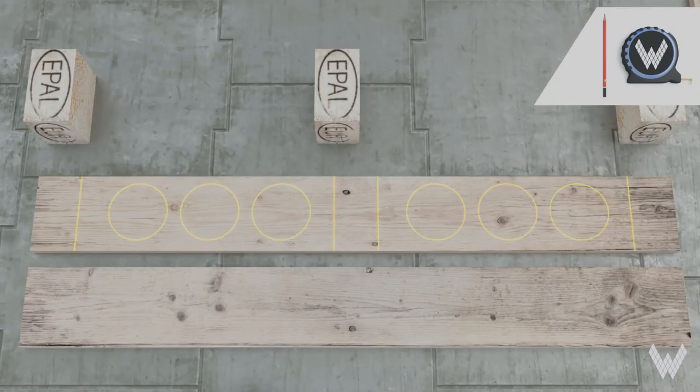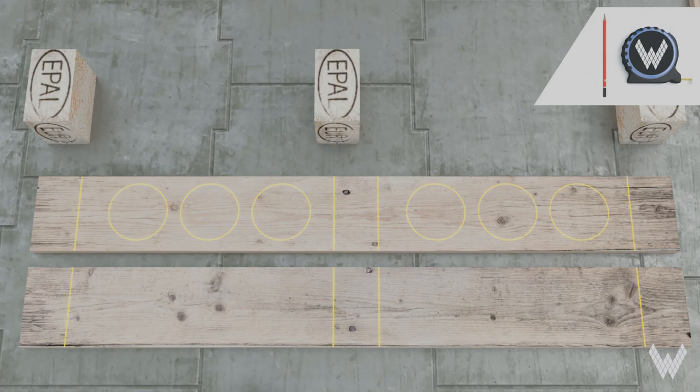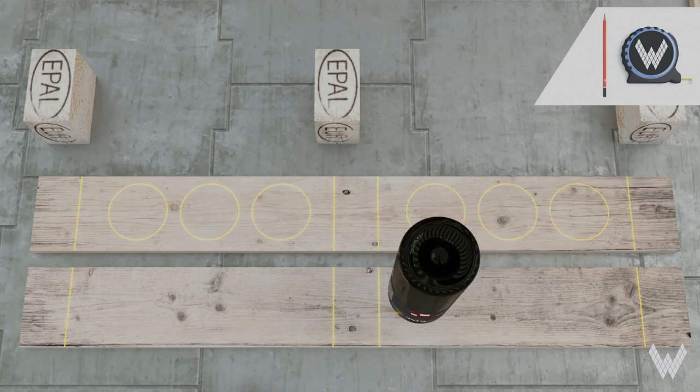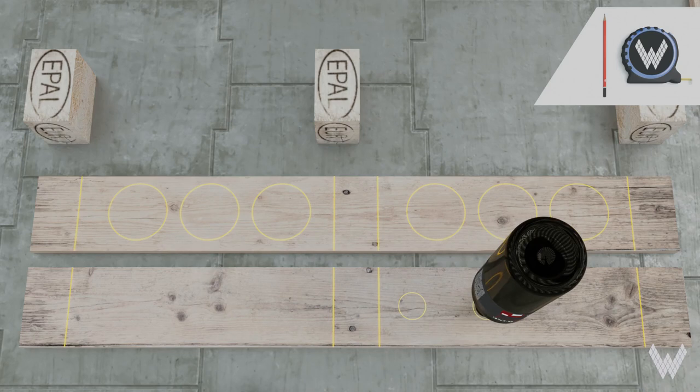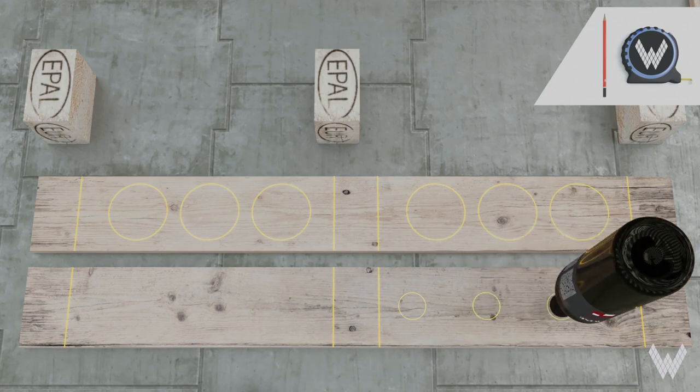Now take the second plank and transfer the marks of the blocks of the first one. Then spin your bottle and mark circles with the top side of the bottle. Make sure these ones got an offset in the left direction.